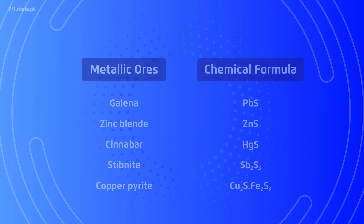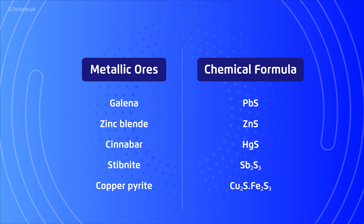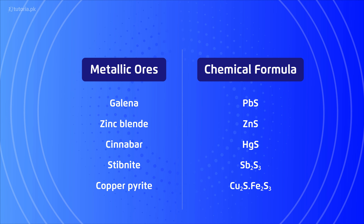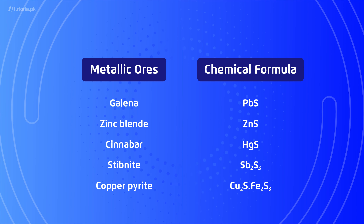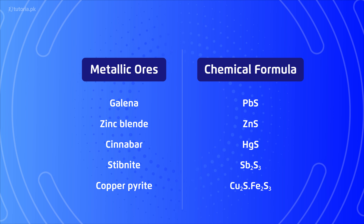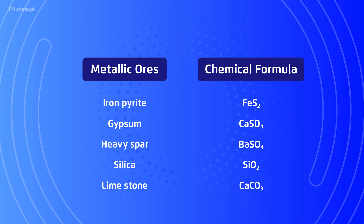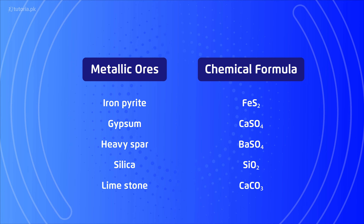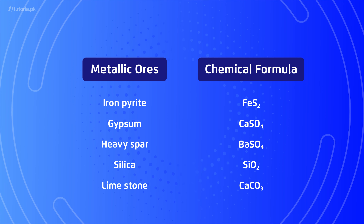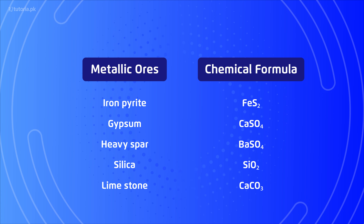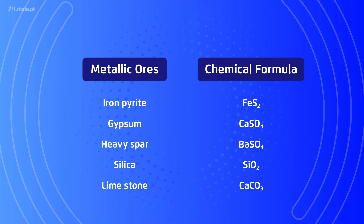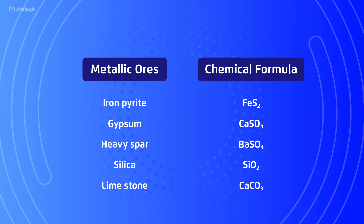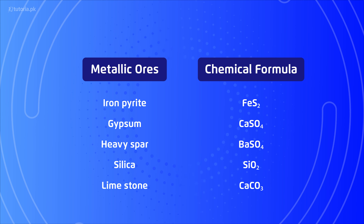General characteristics of Group 6A: they occur in metallic ores such as lead sulfide, zinc sulfide, copper pyrite, iron pyrite, gypsum, heavy spar, silica, and limestone. Oxygen covers 50% of the Earth's crust in combined form. Water in combined form contains 89% oxygen.